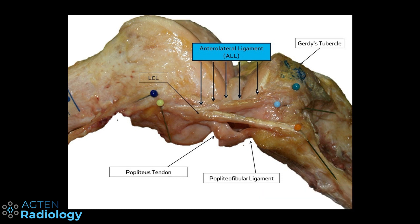What is the anterolateral ligament? The anterolateral ligament is an additional lateral ligament that runs a little bit more oblique and anteriorly compared to the lateral collateral ligament. They have a similar origin and on MRI it's not really possible to separate them.